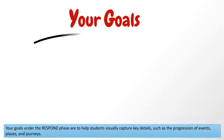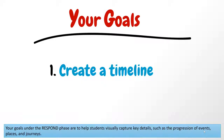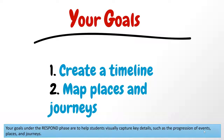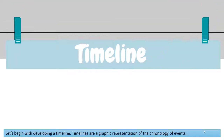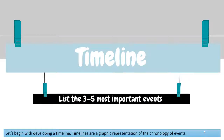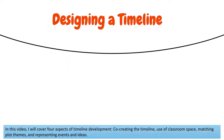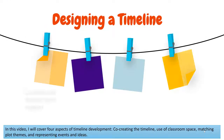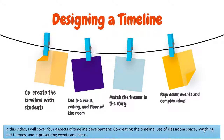Your goals under the RESPOND phase are to help students visually capture key details such as the progression of events, places, and journeys. Let's begin with developing a timeline. Timelines are a graphic representation of the chronology of events. In this video, I will cover four aspects of timeline development: co-creating the timeline, use of classroom space, matching plot themes, and representing events and ideas.